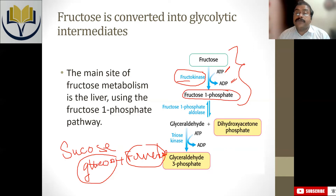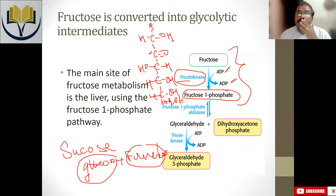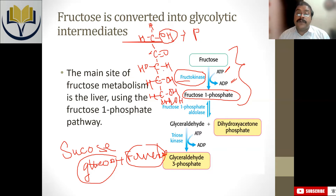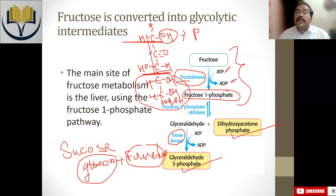Fructose-1-phosphate is a 6-carbon component. In the structure of fructose-1-phosphate, the alcohol group at position 1 is replaced by the phosphate. This fructose-1-phosphate can easily be cleaved by the enzyme fructose-1-phosphate aldolase, which cleaves after the first 3 carbons. It will produce dihydroxyacetone phosphate and glyceraldehyde. This glyceraldehyde, using the enzyme triose kinase, is then converted into glyceraldehyde-3-phosphate.